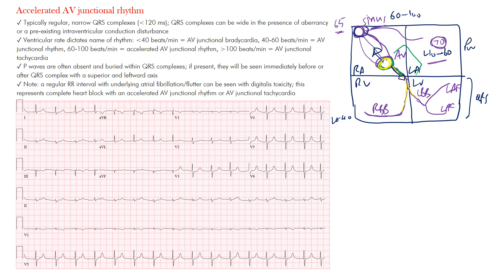If the impulse conducts both antegrade and retrograde, you may see a P wave and a QRS complex. However, the P wave is relatively small compared to the QRS and may be buried within it. You may also see a change in the axis of the P wave — going opposite from the inferior leads — producing inverted P waves in those leads.